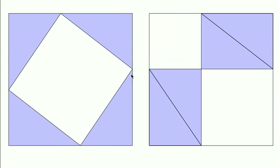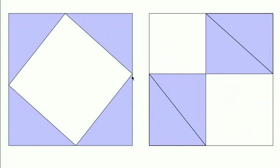And you can visually see pretty easily that the area of the white square on the left is always equal to the area of the white squares on the right.